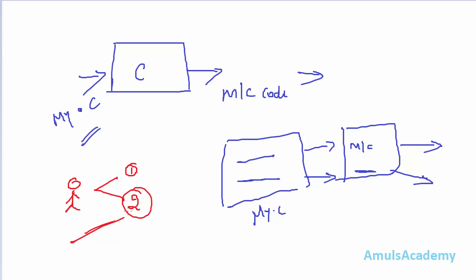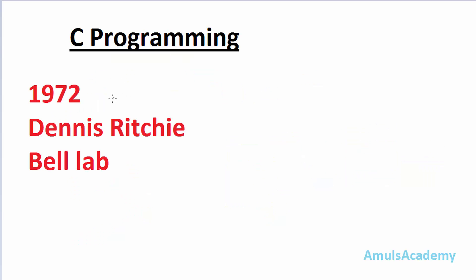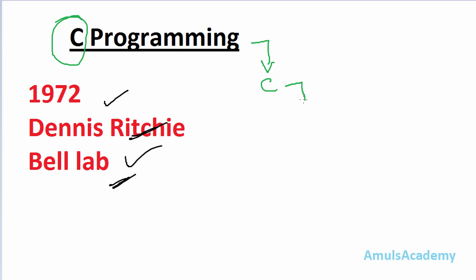Now let's discuss the history of C. C was developed in 1972 by Dennis Ritchie at Bell Laboratories. It is named C because it derives features from language B, which is the stripped-down version of BCPL — Basic Combined Programming Language. After B, C comes next alphabetically, so he named it C programming language.